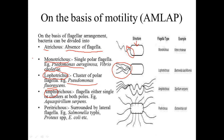To recap: in Monotricus, only a single flagella is present at one polar end. In Lophotricus, a cluster of flagella is present at one polar end. But in Amphitricus, a single flagella or a cluster of flagella may be present at both polar ends. An example of Amphitricus is Aquaspirillum serpens.